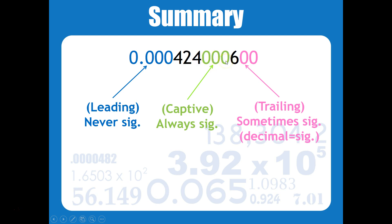Captive zeros are always significant, and trailing zeros are sometimes only if there's a decimal point. Well, guess what? There is a decimal point, so that means that these trailing zeros would be considered significant. So that means that there would be a total of 1, 2, 3, 4, 5, 6, 7, 8, 9 sig figs in this number.